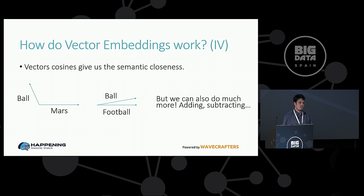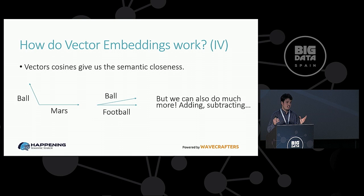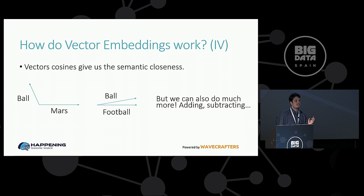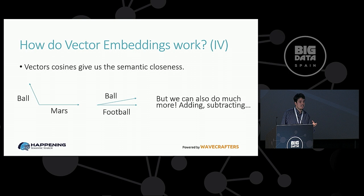So, how do the vectors actually work? Welcome back to Math 101. As you remember from math class, a vector similarity is given by its cosine. When the cosine is near zero, the vectors are very different; when it's near one, they are very close. Because our words are now represented as vectors, this gives us the semantic information — the semantic closeness. For example, 'ball' and 'Mars' don't have anything to do with each other, so their vectors are very separated and the cosine will be near zero. If you have 'ball' and 'football', which are two very similar concepts, the cosine will be near one. But we can do a lot more operations — we can add, we can subtract.